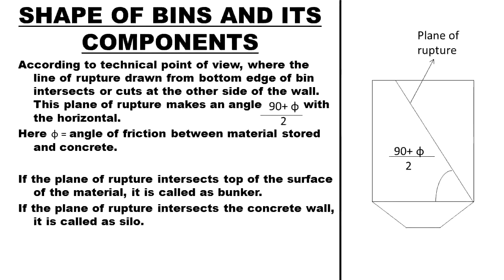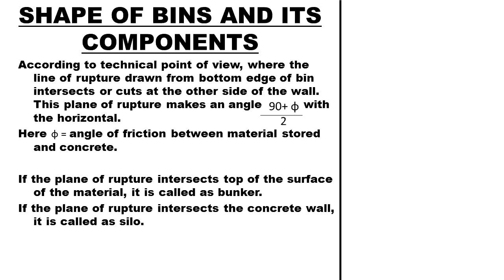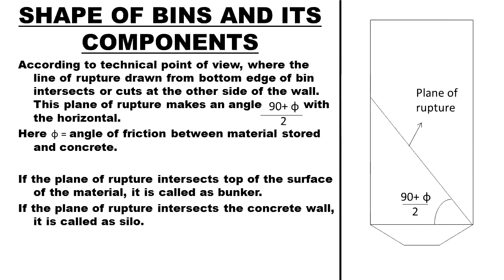From a technical point of view, the line of rupture is drawn from the bottom edge of the bin and intersects the other side of the wall. This plane of rupture makes an angle of (90 + φ)/2 with the horizontal, where φ equals the angle of friction between the material stored and the concrete. If the plane of rupture intersects the top surface of the material, it is called a Bunker. If the plane of rupture intersects the concrete wall, it is called a Silo.